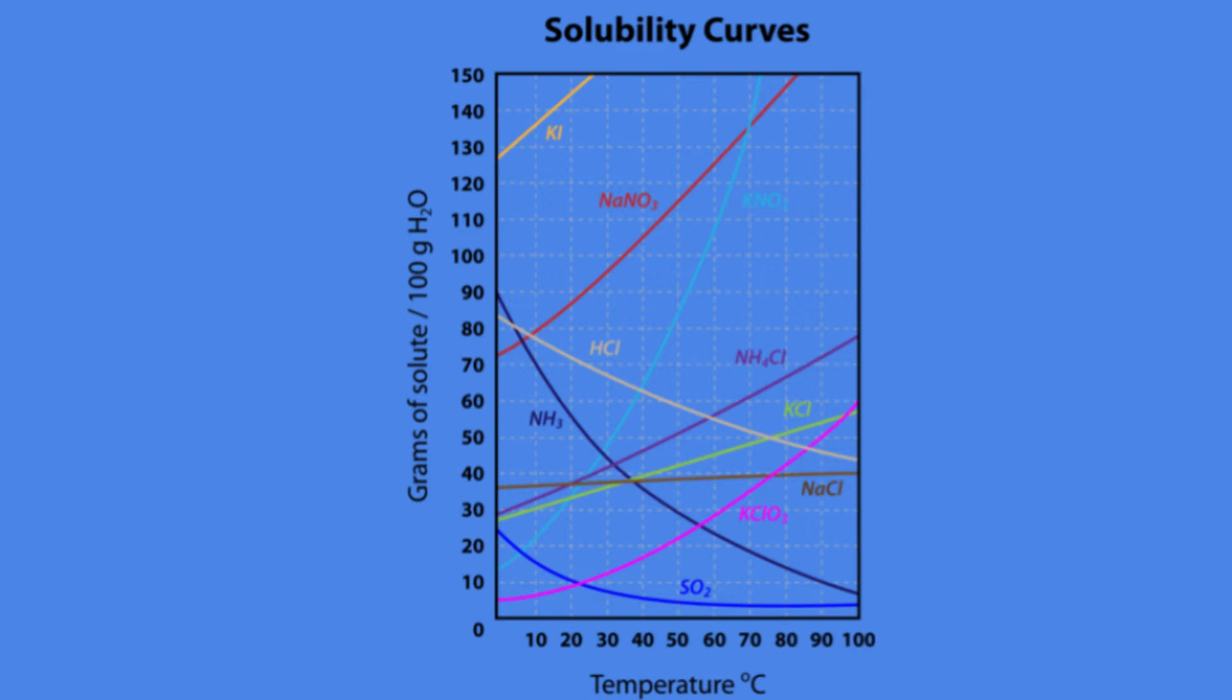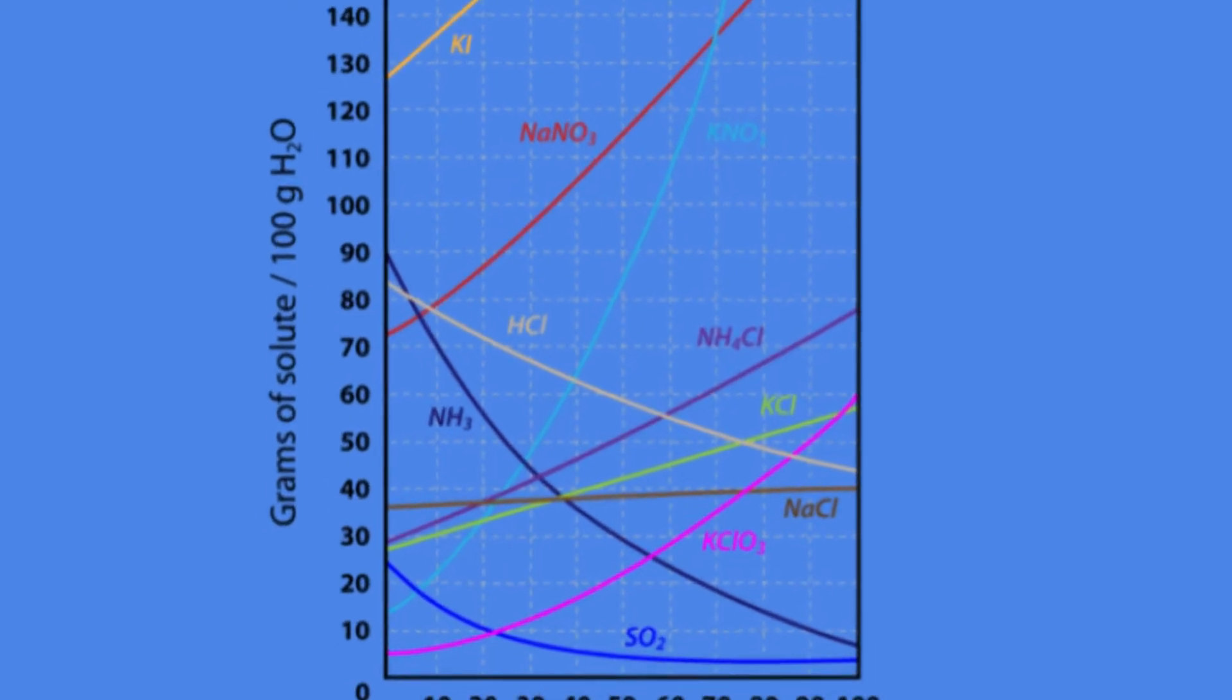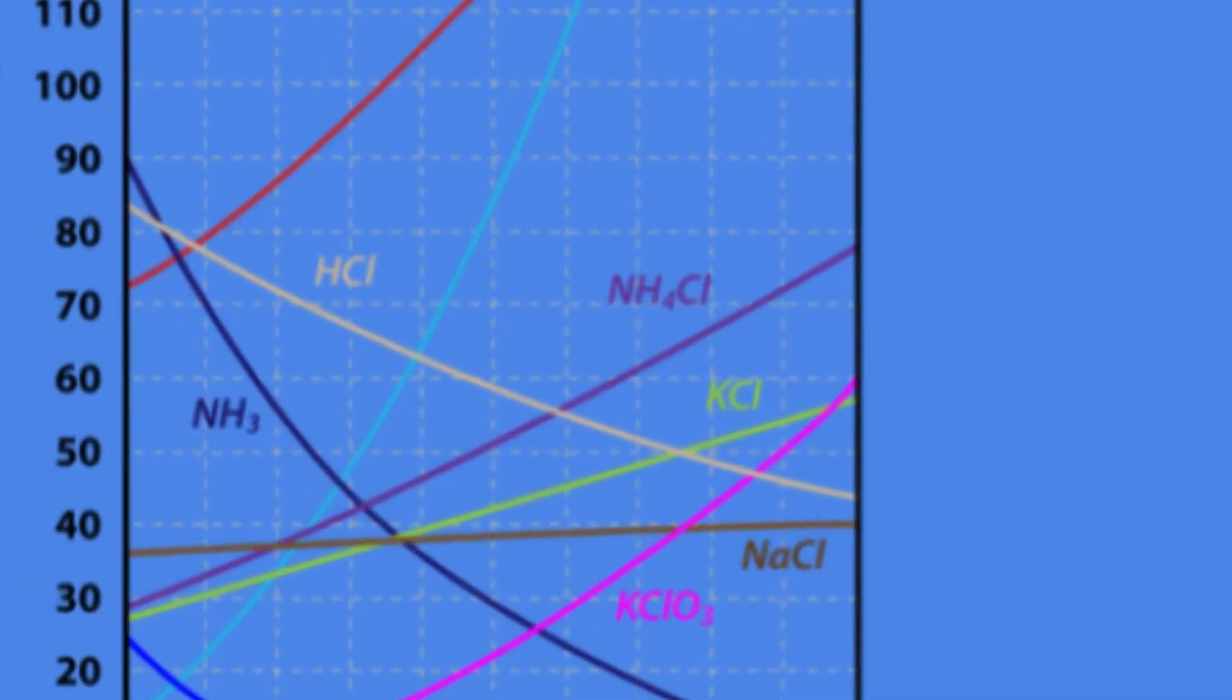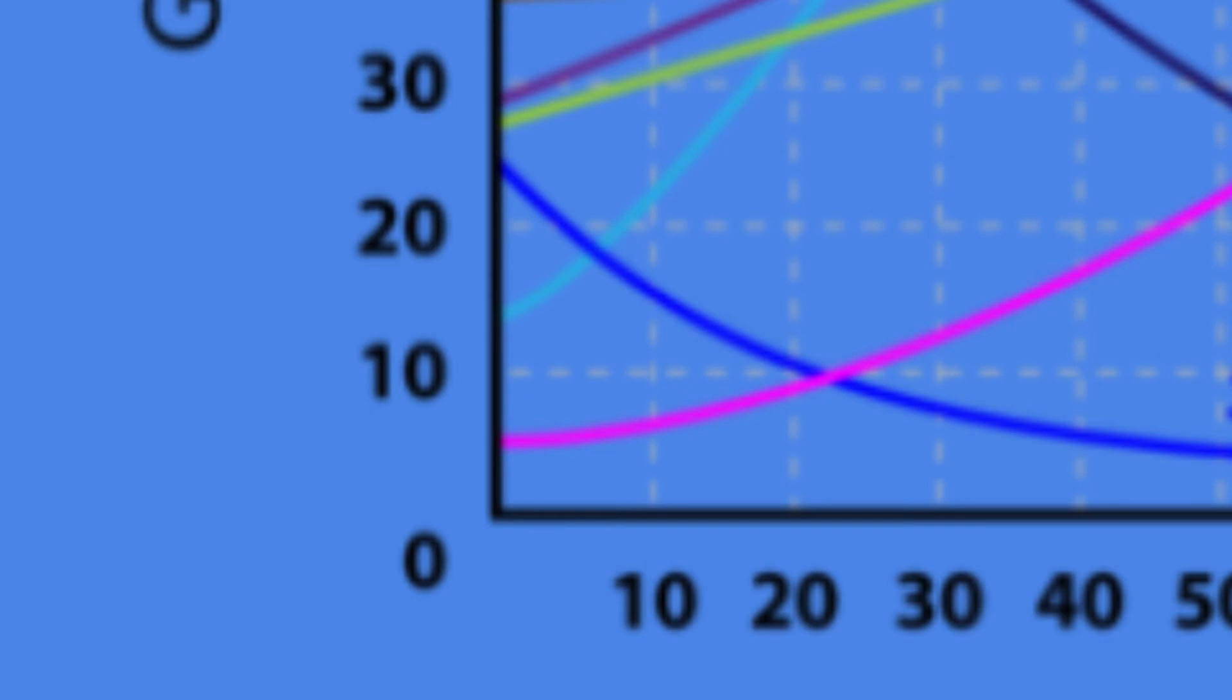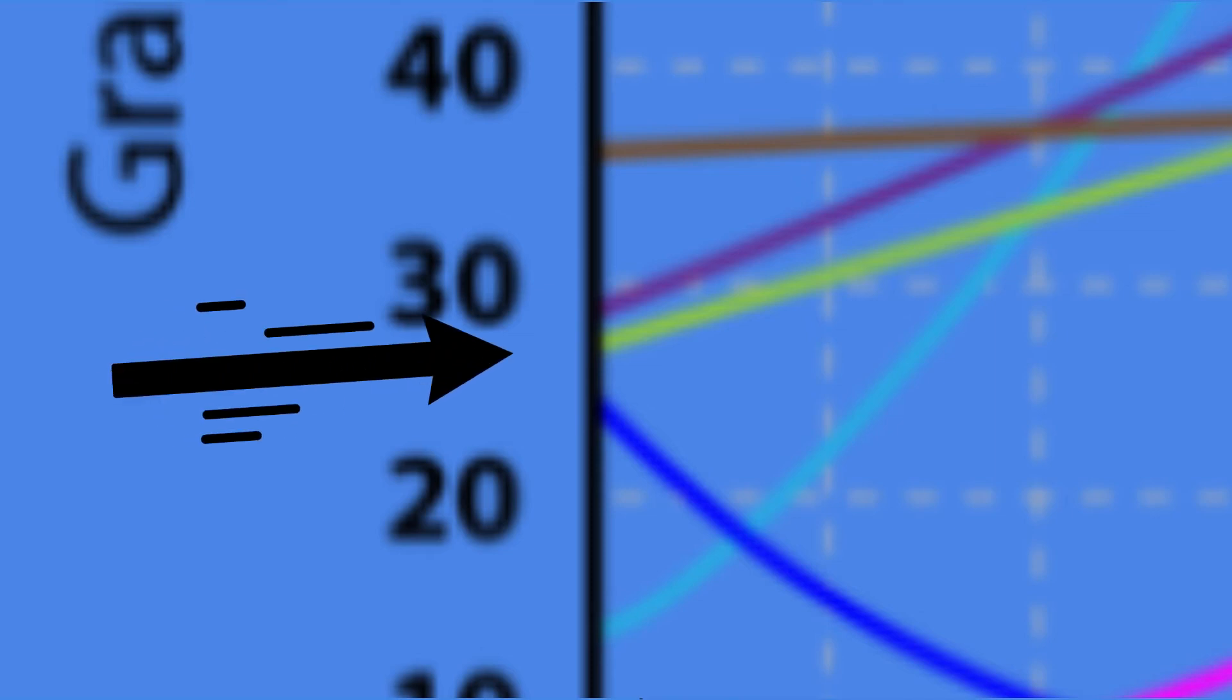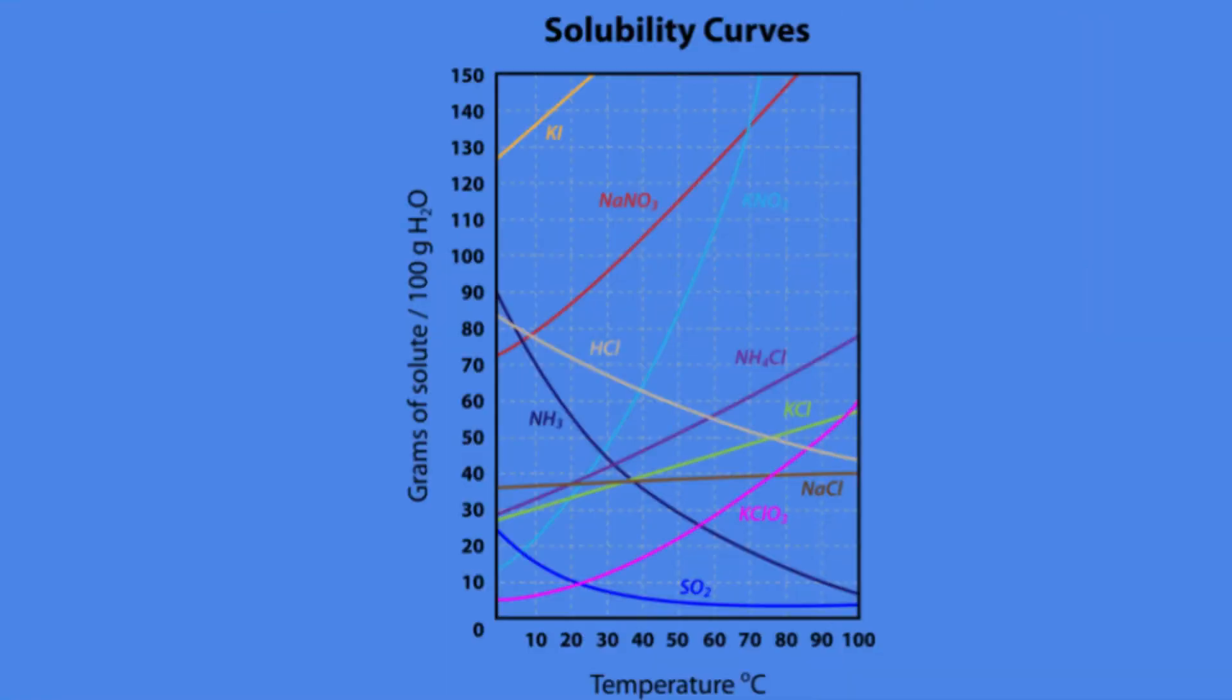Let's take a look at KCl, potassium chloride. Let's get a starting place. At zero degrees Celsius, we take a look at the y-axis and we move up. We see that it is about 28. We'll say 28 grams of KCl is able to dissolve at zero degrees Celsius.